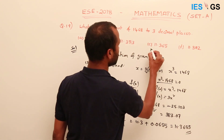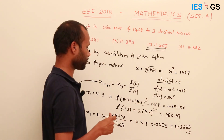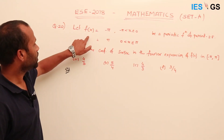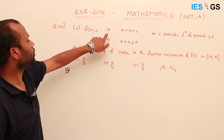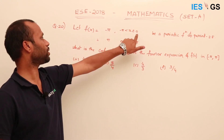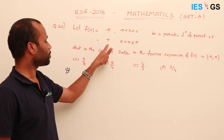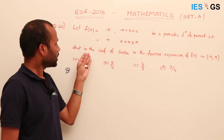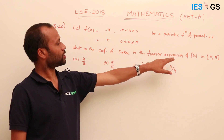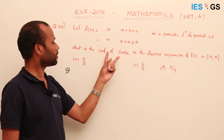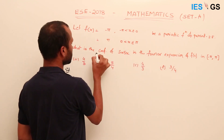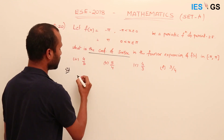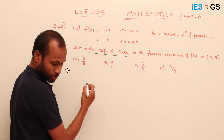Question number 20: f(x) is defined as −π on the interval [−π, 0] and π on the interval [0, π]. In the Fourier series expansion of f(x), what is the coefficient of sin(5x)? From the Fourier expansion definition, f(x) = a₀/2 + Σ(aₙ cos(nx) + bₙ sin(nx)).